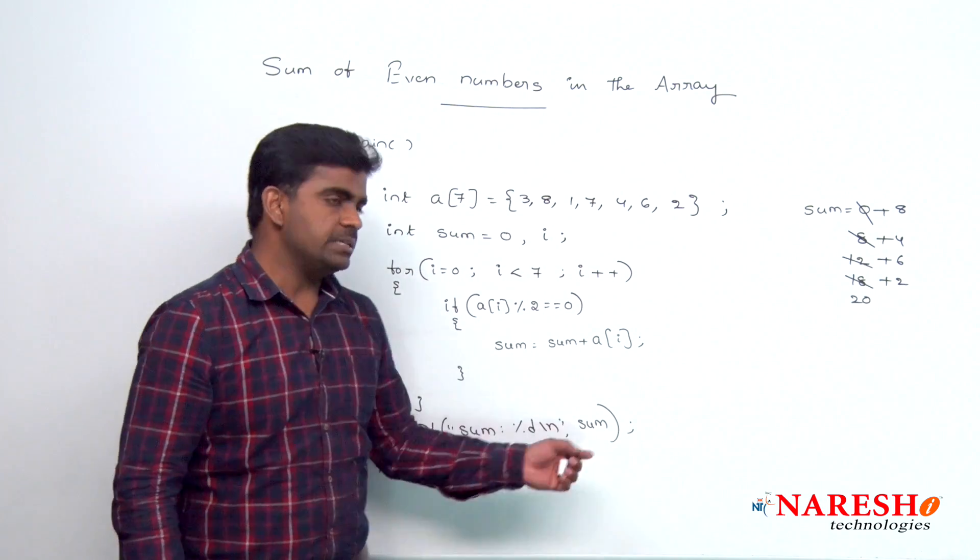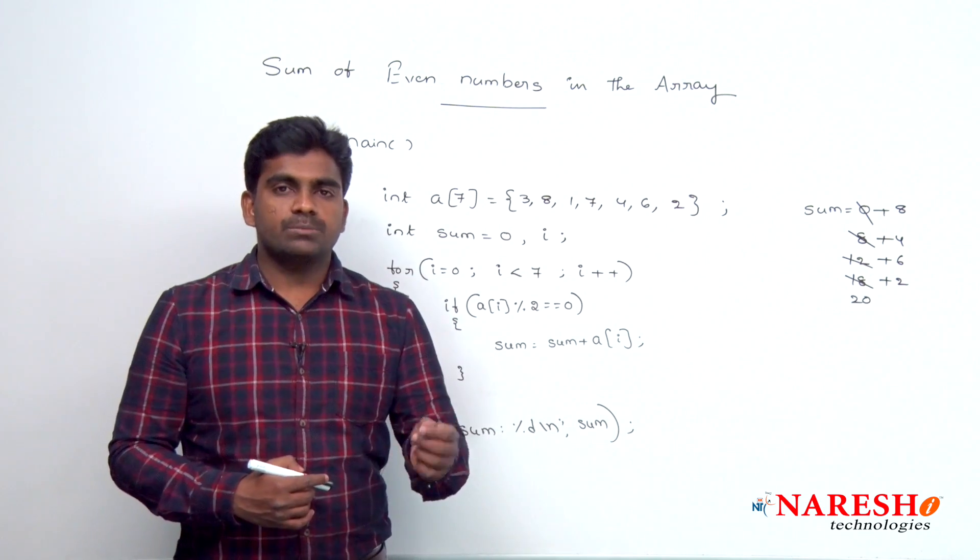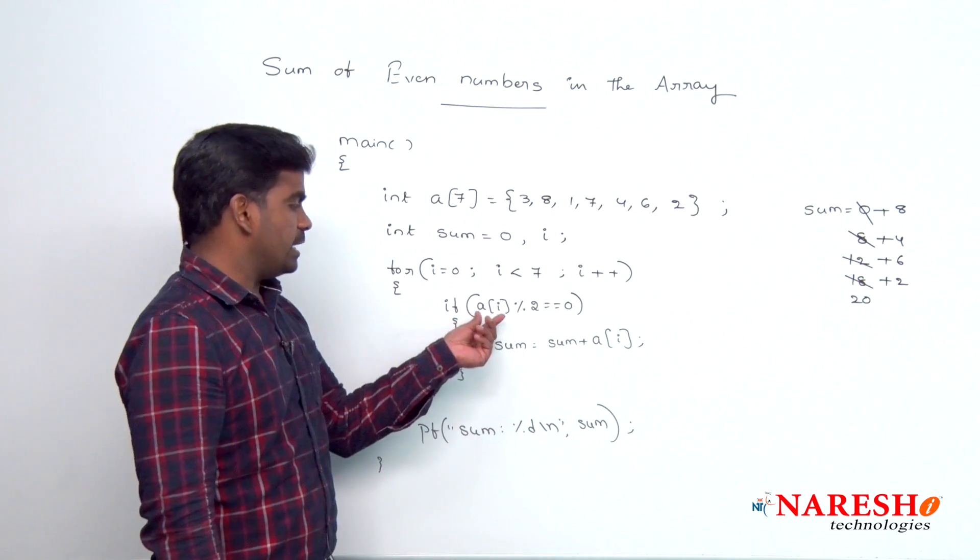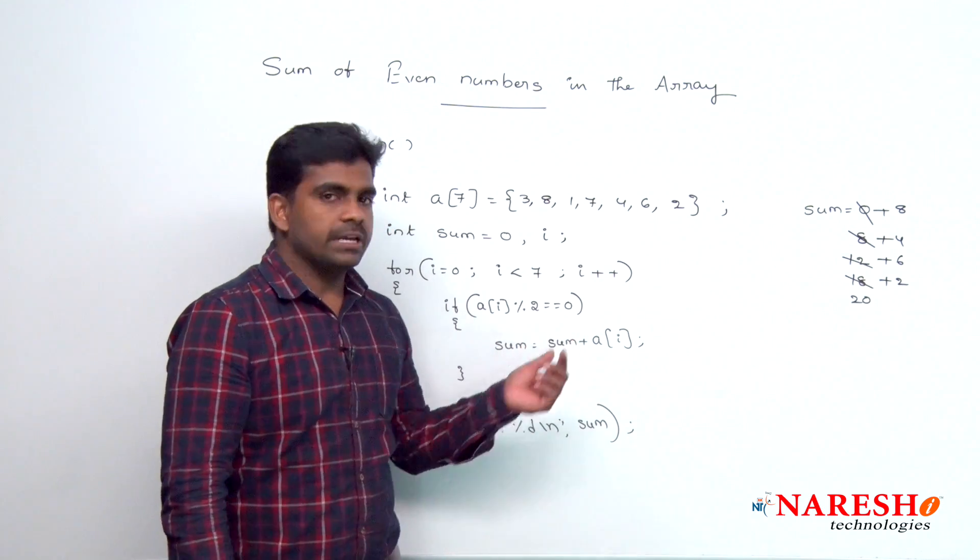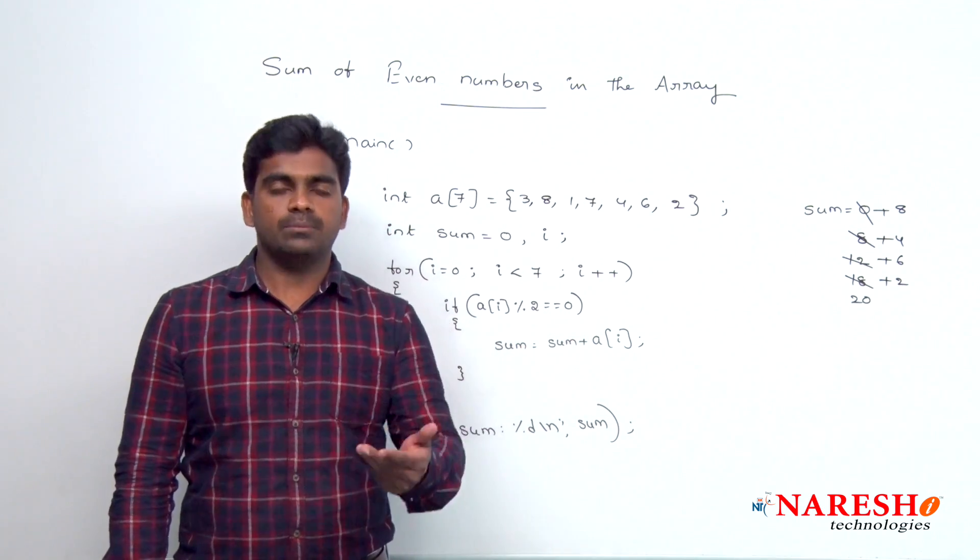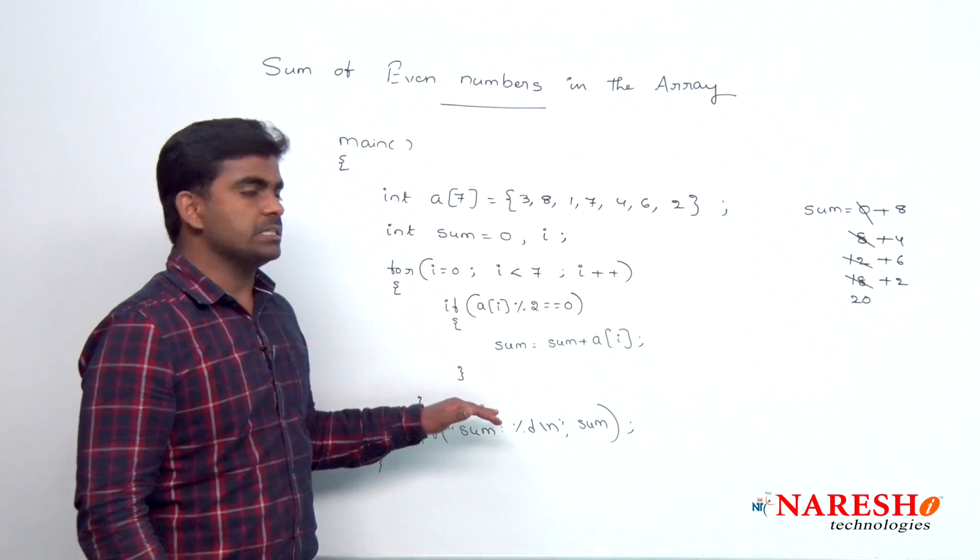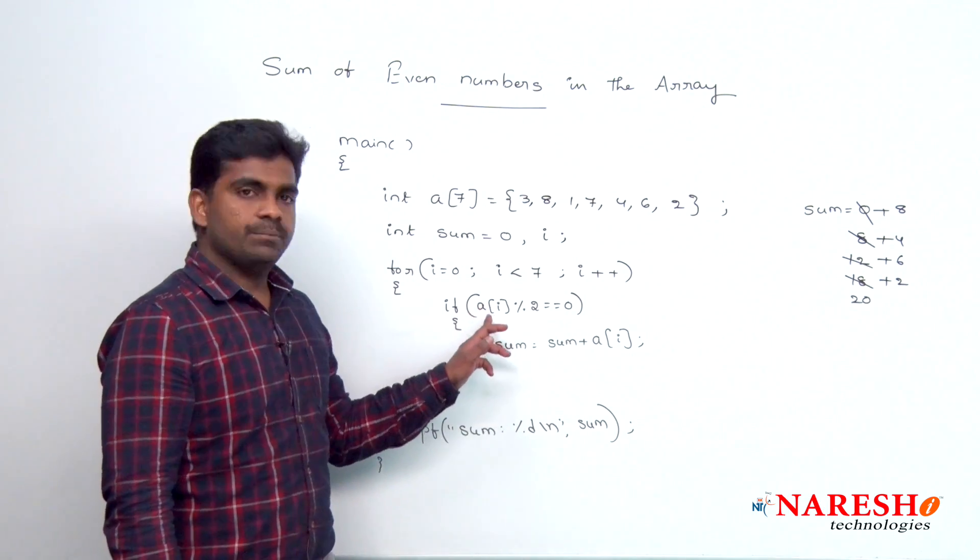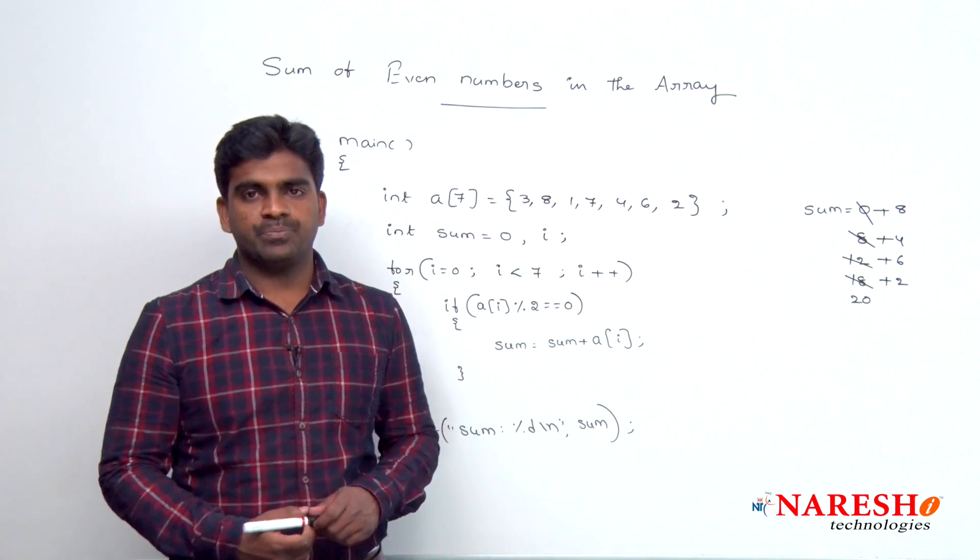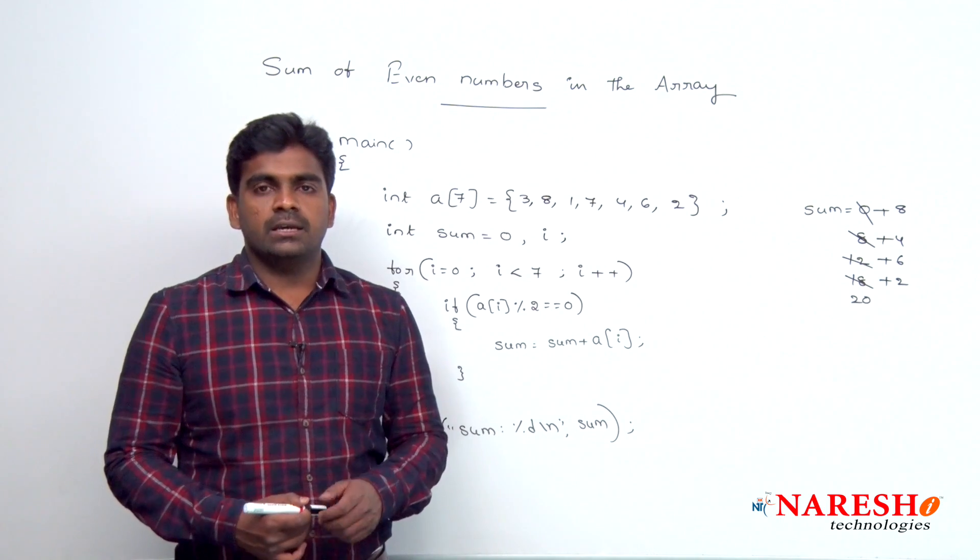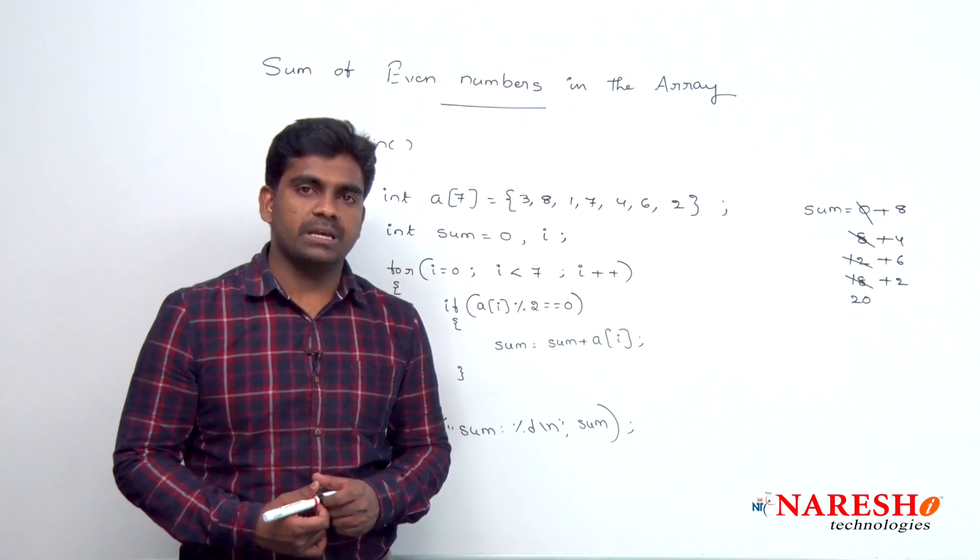Sum of even numbers we are printing. Suppose, if you want to display sum of odd numbers, a of i mod 2 not equal to 0, that is what odd numbers sum you are printing. If both I want to print, use if block and else block. If it is even number add to one variable, if it is odd number add to another variable in the else block. Like that you can try, write odd number sum and even and odd both number sum if you want to display.